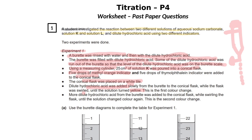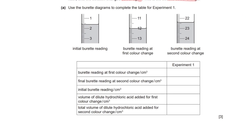Dilute acid was added slowly from the burette to the conical flask while the flask was swirled until the solution turned yellow — this is the first color change. More hydrochloric acid was then added while swirling until the solution changed color again — this is the second color change. Using the burette diagram to complete the table: the burette reading at the first color change is exactly 12, the final burette reading at the second color change is 22.4, and the initial burette reading is 1.6.